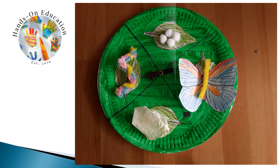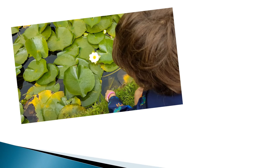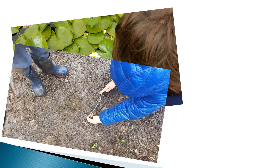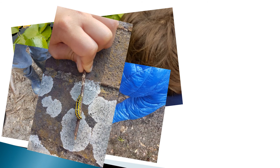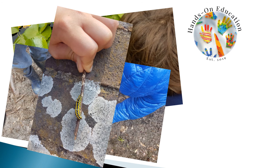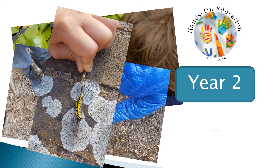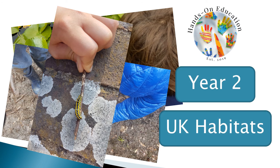For your hands-on activity, create a 3D model to show the different stages in the life cycle of a butterfly. For more information about this activity and more activities relating to habitats, please go to handsoneducation.com year 2 UK habitats.